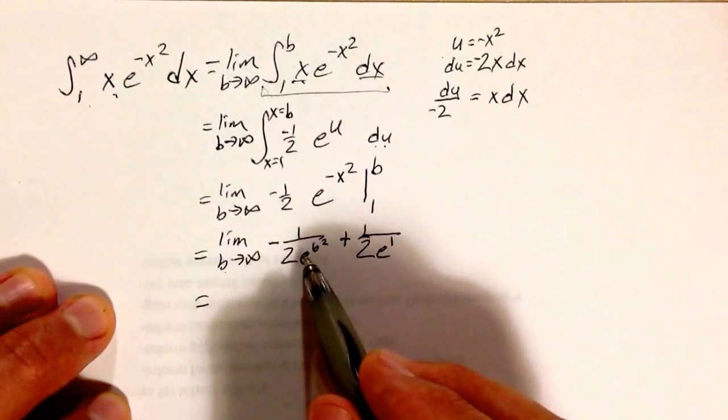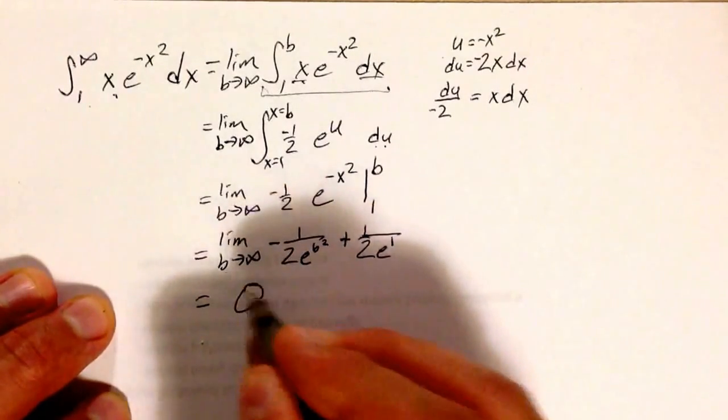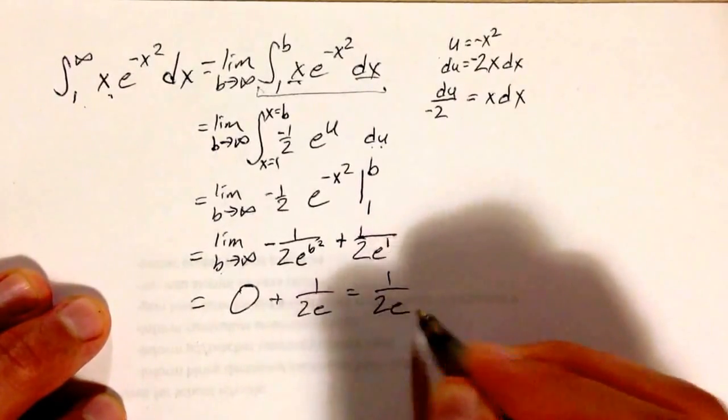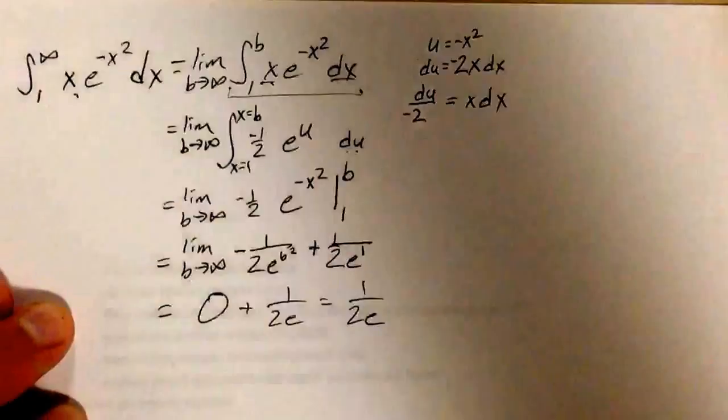the denominator goes to infinity, so this is 0 plus 1 over 2e, which is 1 over 2e, and clearly the integral converges.